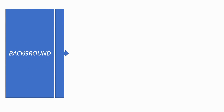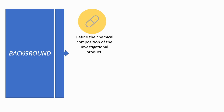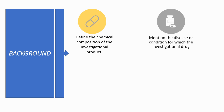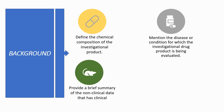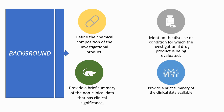Let's have a brief description about what goes in the background information. We need to identify the product to be studied and describe it briefly. We need to define the chemical composition of the investigational product, mention the disease or condition for which the investigational drug product is being evaluated, provide a brief summary of the known clinical or animal study data that has clinical significance, and also provide a brief summary of the clinical data available that are relevant to the study.